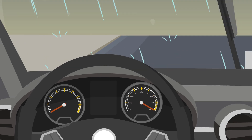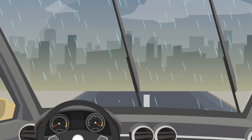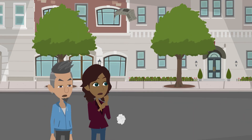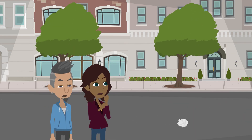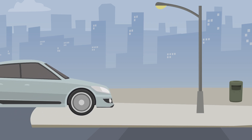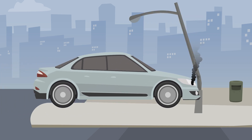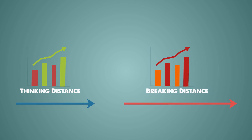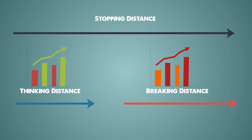The speed of the car affects both. If the car is going faster, it will increase the thinking distance and it will increase the braking distance as well. And remember, anything that increases thinking or braking distance will also increase the total stopping distance of the car.